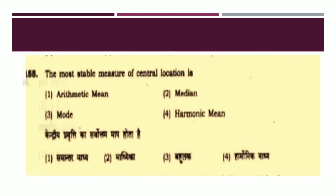The next question: The most stable measure of central location is. The options are: Arithmetic mean, Median, Mode, or Harmonic mean. The right answer is Option number one: Arithmetic mean.